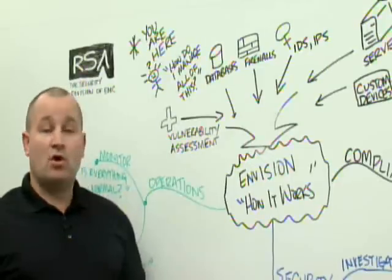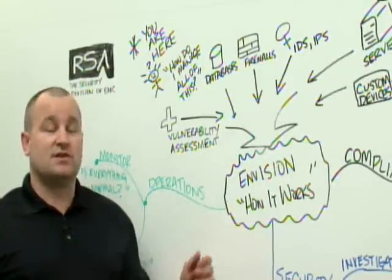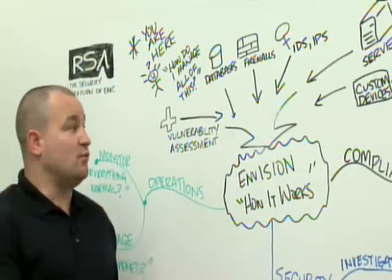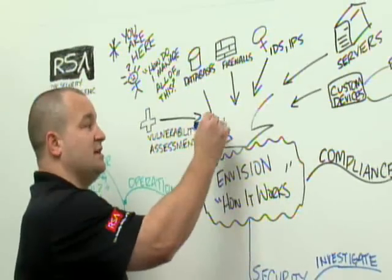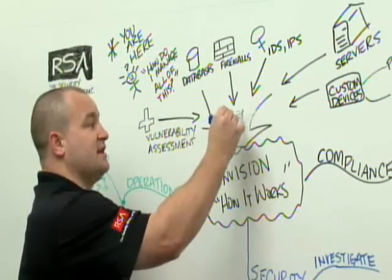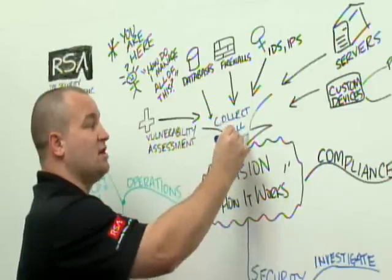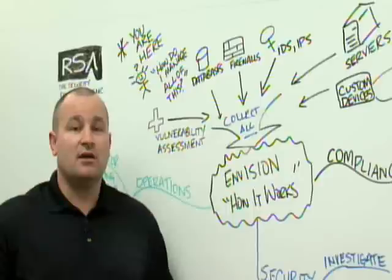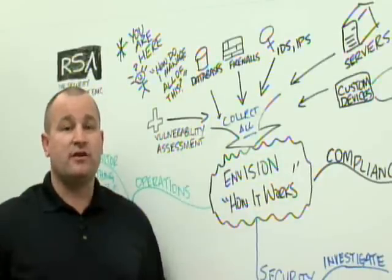The solution from RSA is called Envision. It's a security information and event management system, and the first thing that we'll help customers do is collect all of this data, which is very key. For compliance purposes especially, when you collect the data, you need to have access to all of the data.